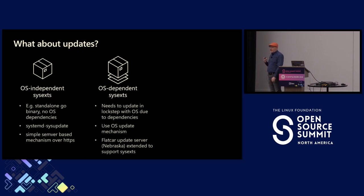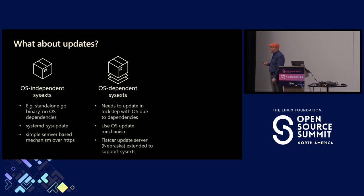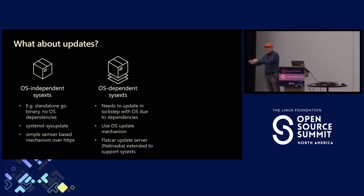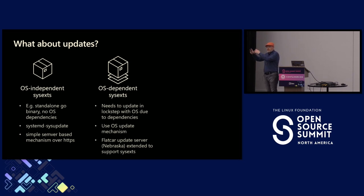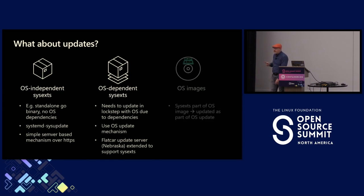Then there's what I call OS-dependent sysexts, where there's a tighter link — the sysext is still shipped separate from the OS image, but for some dependency reason it needs to be shipped in lockstep with the OS. An example of this is those OEM tools I talked about — we developed this because we wanted to have control over the Azure Linux agent deployed along with the Flatcar image. Here we basically piggybacked on top of the existing OS update mechanism: we extended the update server protocol for Flatcar to also say, in addition to any OS images, do you have any new sysexts for me? So the existing Flatcar server update infrastructure can serve these sysexts down to those nodes.